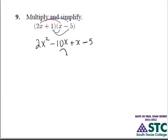Now, we combine like terms here in the middle, and we obtain our result: 2x squared minus 9x minus 5.